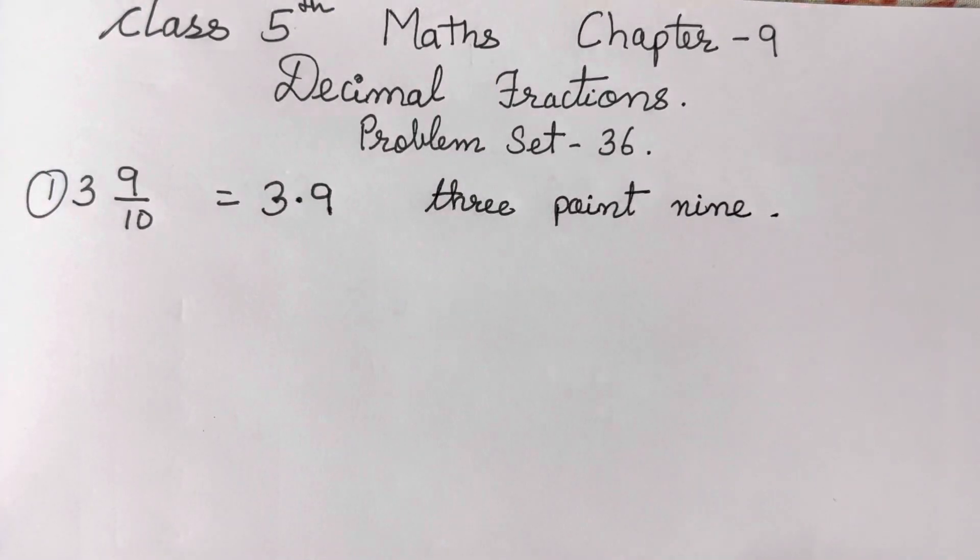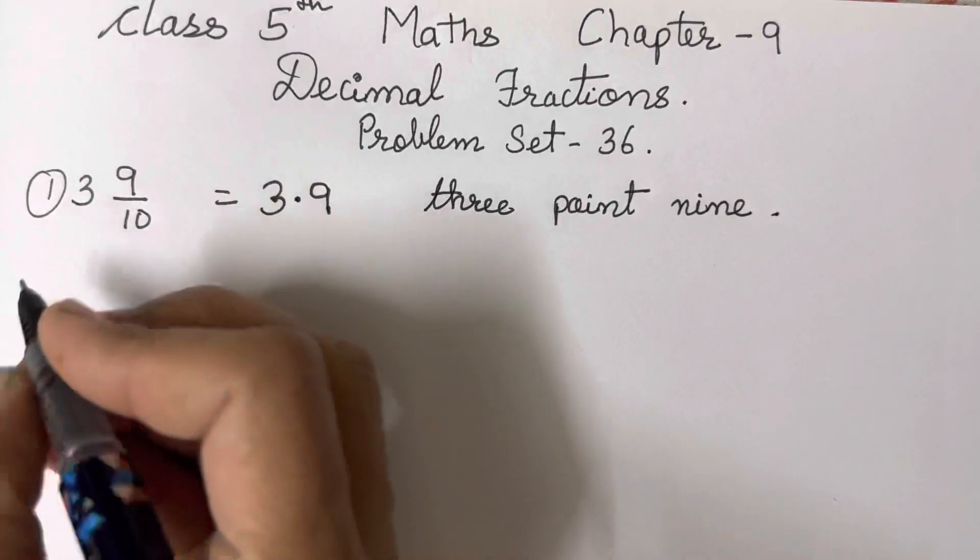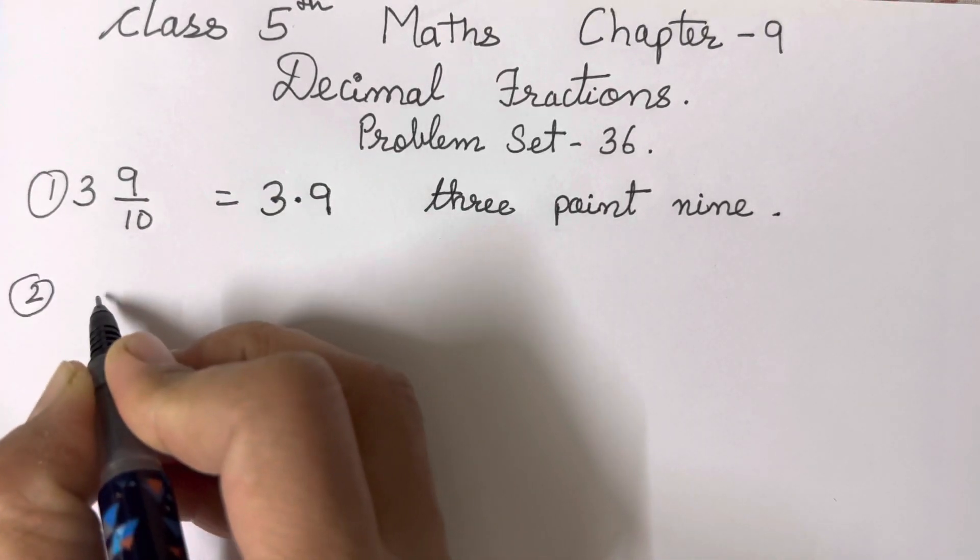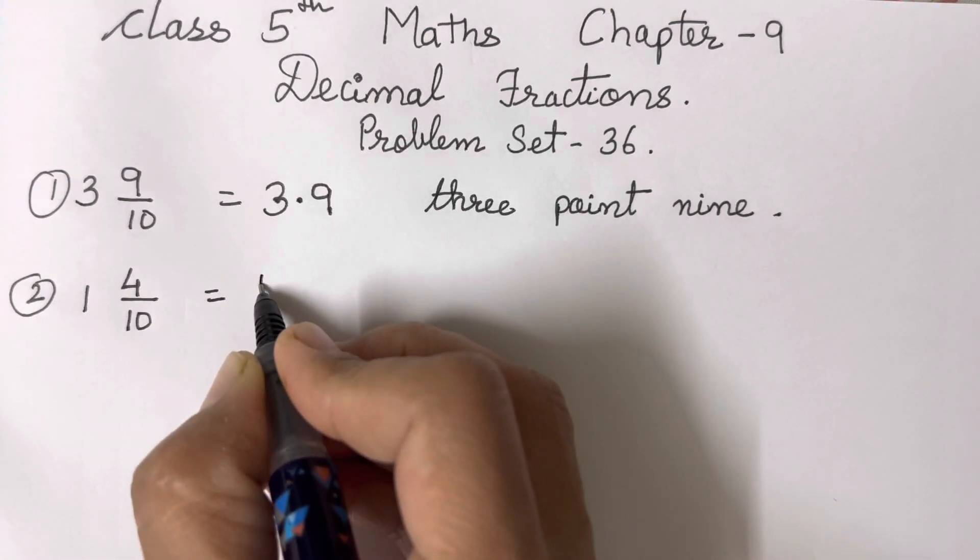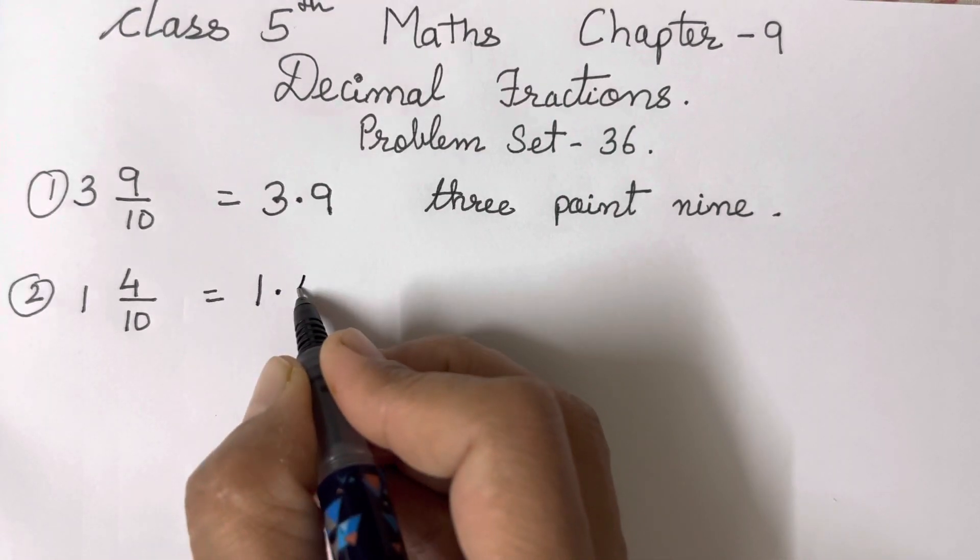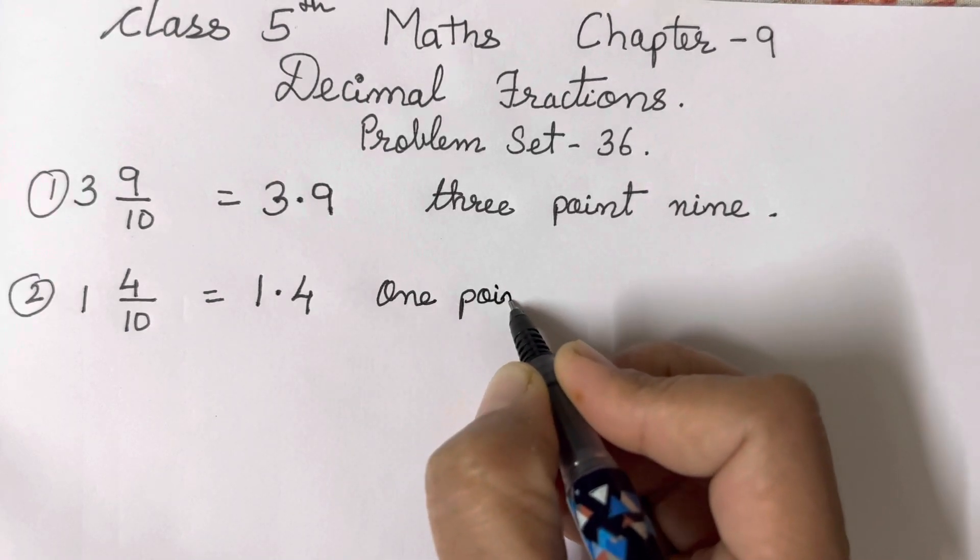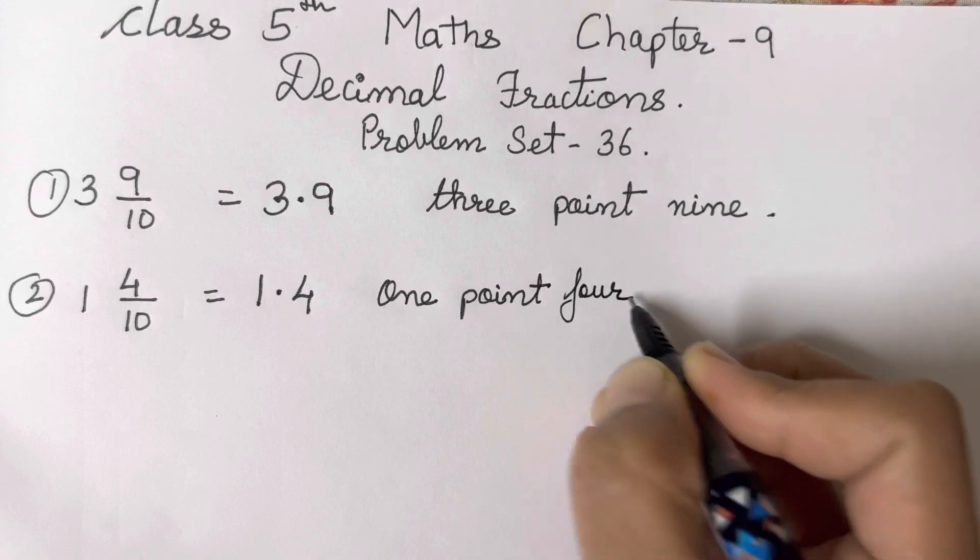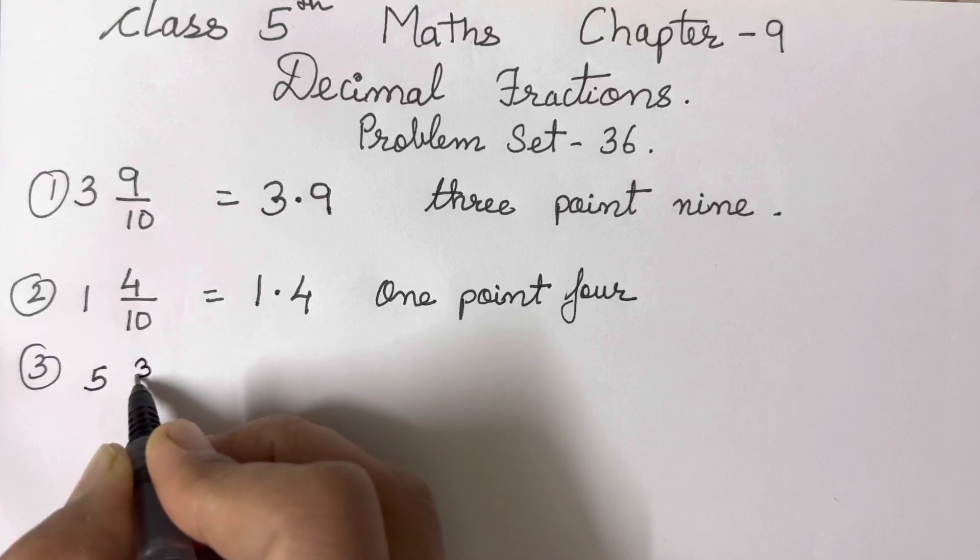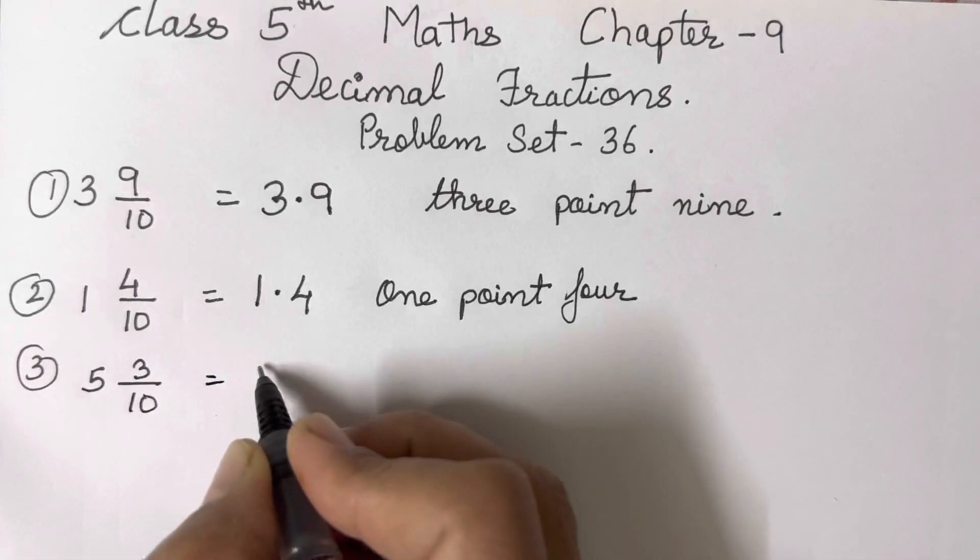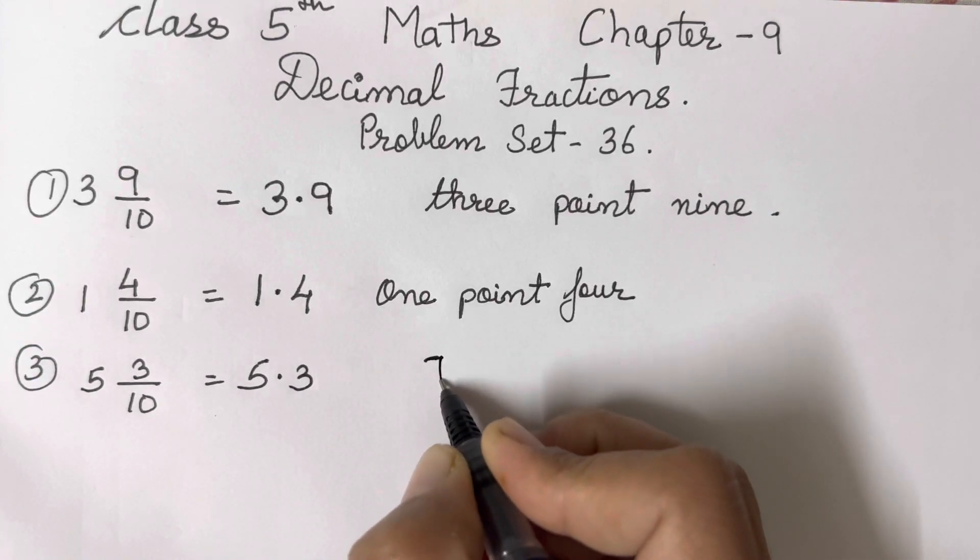Isn't it easy? It's very easy. Remember the decimal point is 10. Next question, 100 is going to be there, so I will teach you how you have to write that also. 1 and 4 upon 10, so 1 will come before decimal point, after decimal point will come 4, so you have to write 1.4. The next one is 5 and 3 upon 10, so 5.3.